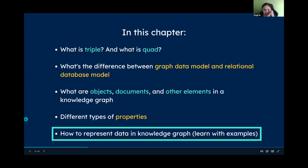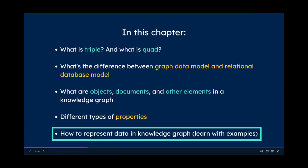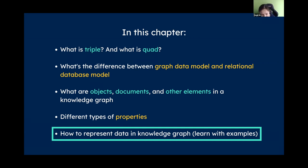Knowledge graph data modeling: the atom of a knowledge graph is a triple — the minimal unit is a triple. What we'll do today is convert an example relational database into a graph database. We also need to know the difference. We'll cover terms like objects, documents, properties — and importantly, how to represent data in a knowledge graph, how to use it to describe anything.